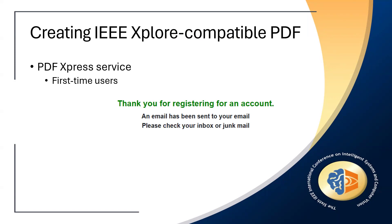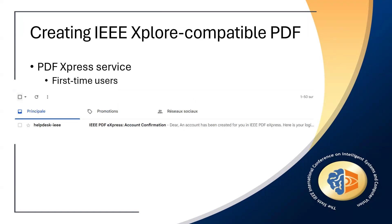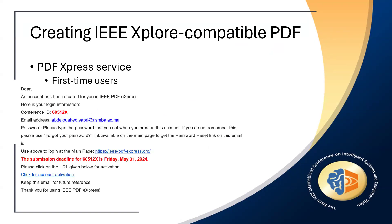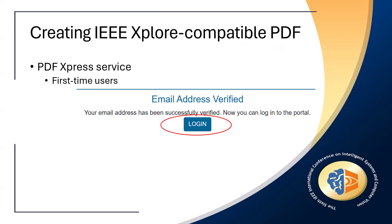An online confirmation will be displayed and an email confirmation will be sent to verify your account setup. Check your email to activate your account. Open the email received which contains information about your new account. Click on the account activation link to activate your PDF Express account. A validation message is displayed which means your account has been successfully created. Then click on login.